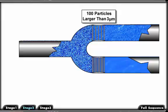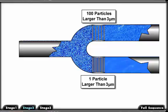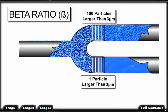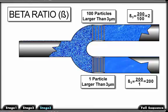You can see that the filter at the top allowed 100 particles through. The filter on the bottom allowed only one particle through. If we apply these numbers to the beta ratio formula, we can see that the filter at the top has a lower or less efficient beta ratio, and the filter at the bottom has a higher or more efficient beta ratio. Now that you understand the beta ratio, you can click on Full Sequence to watch fluid flow through the filters again.